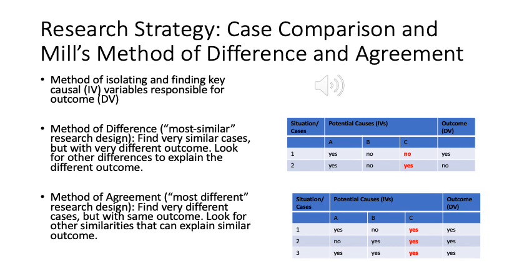It is the thing they do not have in common that will help explain the different outcome. The method of agreement — also referred to as the most different research design — is the mirror image: we find very different cases with the same outcome, and look for similarities that can explain it. The things that are different about them cannot explain why they are similar; it is those things they have in common that are most likely responsible for the similar outcome.